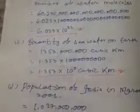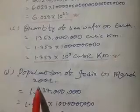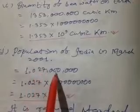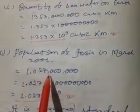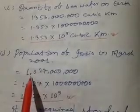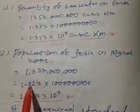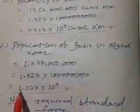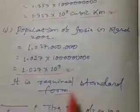Last question of this exercise is population of India in March 2001 equal to 1027 and 6 zeros. At first we write 1027 multiply 1 and 6 zeros, and we need to write only one number that is non-decimal in it. So we write 1.027 into 1 and 9 zeros, or 1.027 into 10 to the power 9. It is the required standard form.